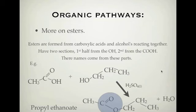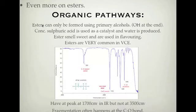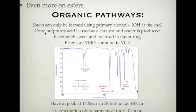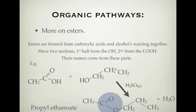Esters can only be formed using primary alcohols — the OH must be at the end of the chain. For example, only 1-propanol can form an ester; a secondary alcohol won't work. Concentrated sulfuric acid is used as a catalyst. You need to know what catalyst is used; sometimes it's given the liquid state symbol, meaning it's very concentrated.